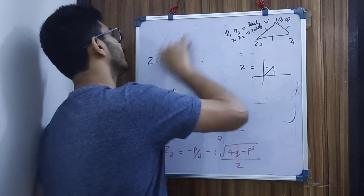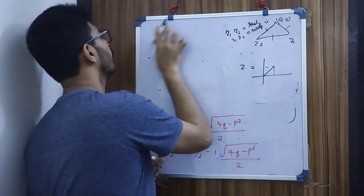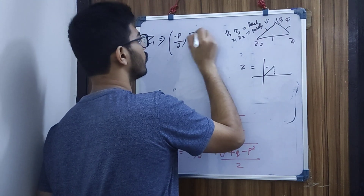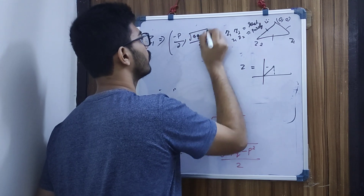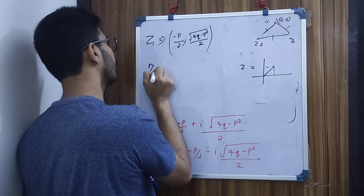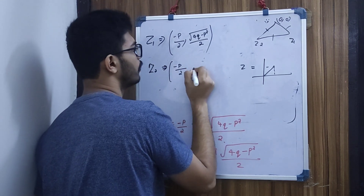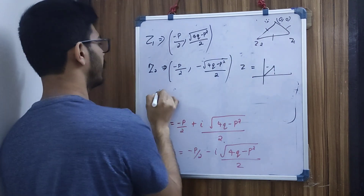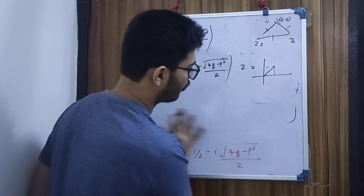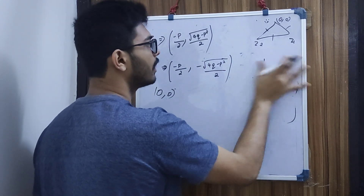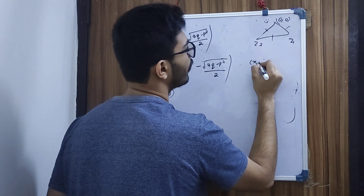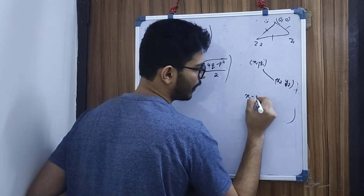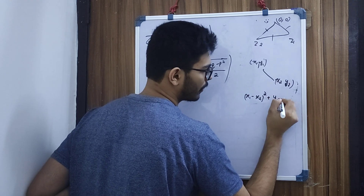Let me write the coordinates of z1 and z2. The point z1 is (−p/2, √(4q − p²)/2) and z2 is (−p/2, −√(4q − p²)/2). We need to plot these points and the origin. The distance formula is √[(x1 − x2)² + (y1 − y2)²].